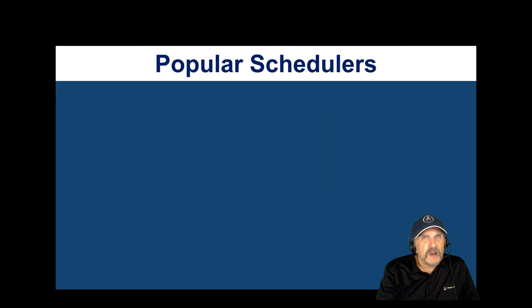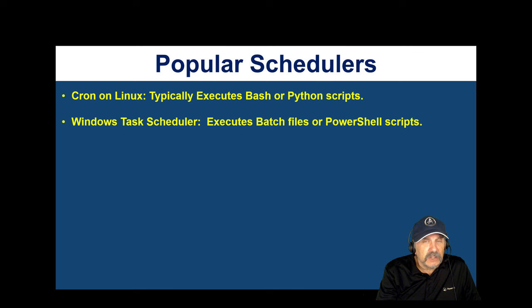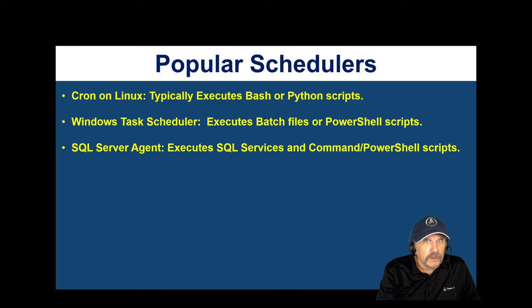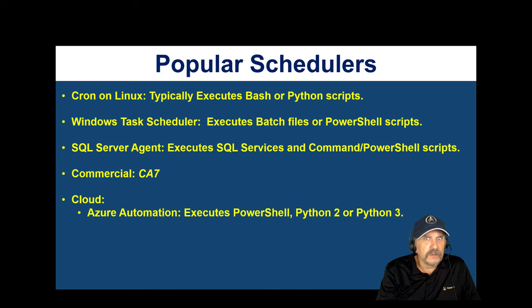Popular schedulers include Cron on Linux, which typically executes Bash or Python scripts. Windows Task Scheduler typically runs batch files or PowerShell scripts. SQL Server Agent can execute SQL services, PowerShell, or command scripts and is designed around SQL Server. A commercial tool called CA7 has been around a long time and is a very powerful job scheduler. On the cloud, Azure Automation is free, flexible, integrates beautifully into Azure with security built in, and supports both PowerShell and Python 3.